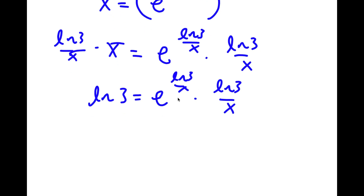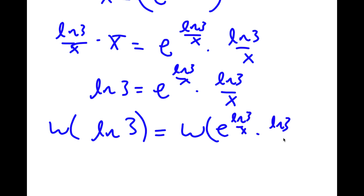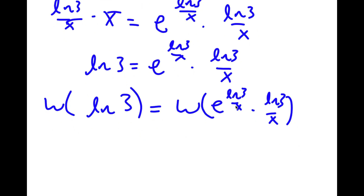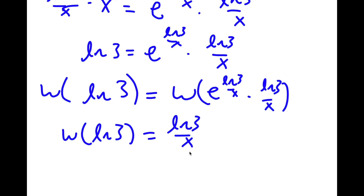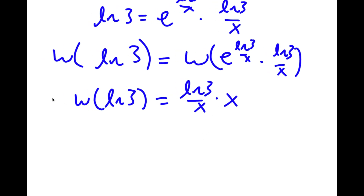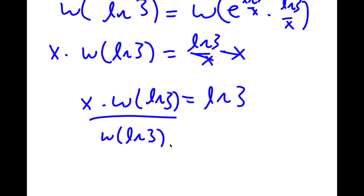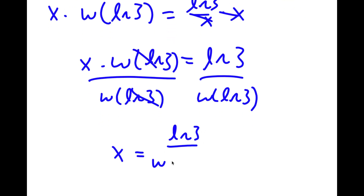Now I can go ahead and take the W Lambert function of both sides. This side simplifies to ln(3) over x. If I multiply both sides by x, these two cancel out, and I get x times W Lambert function of ln(3) is equal to ln(3). Dividing both sides by W(ln 3), I get x is equal to ln(3) over W(ln 3).